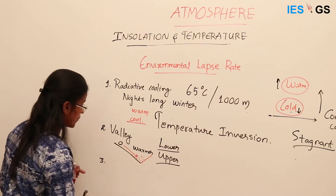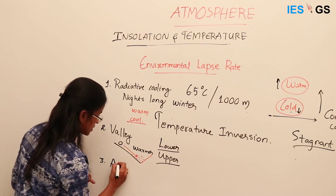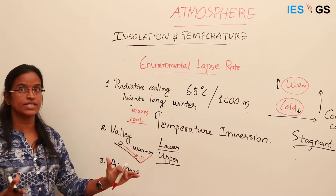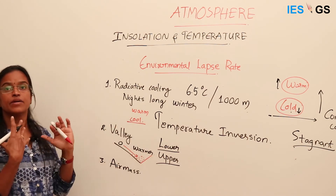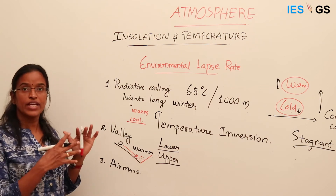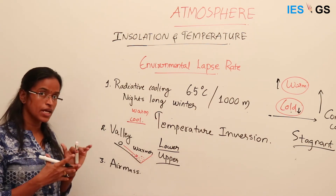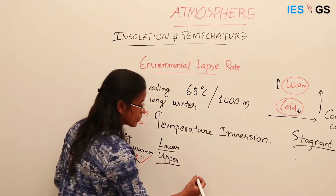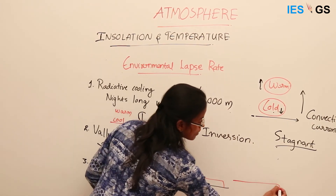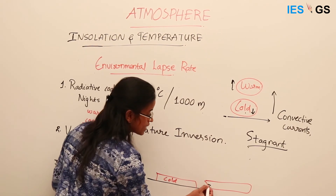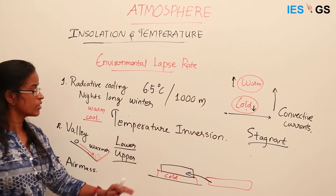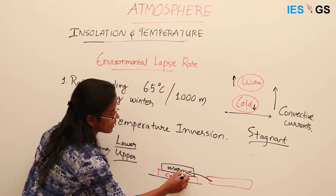Another reason can be air mass interaction. An air mass is an extended air parcel covering a large distance, with homogeneous atmospheric parameters — temperature and pressure remain the same over a large area. When a cold air mass is resting on a surface and a warm air mass arrives from another place, the warm air mass gets lifted over the cold air mass, and temperature inversion occurs here as well.